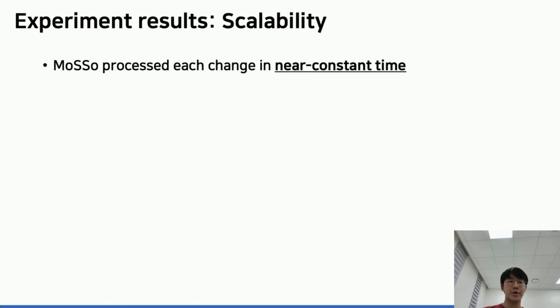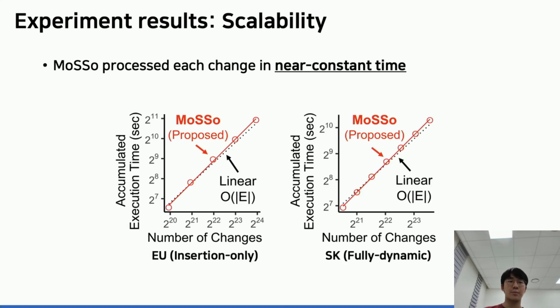Last, we measure the accumulated execution time of MoSso in insertion-only and fully dynamic graph streams in order to analyze how fast the runtime grows. In both environments, the accumulated runtime almost linearly increases, which implies MoSso processes changes in near constant time.